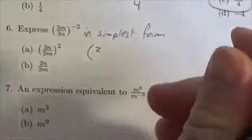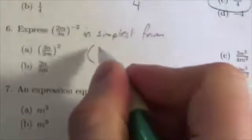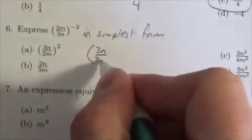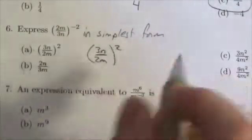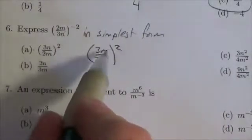Sorry, as soon as I said it, I started writing it as if it hadn't. So what's going to cause the reciprocal, the negative, so it's going to be 3n over 2m. That is the result of the negative.